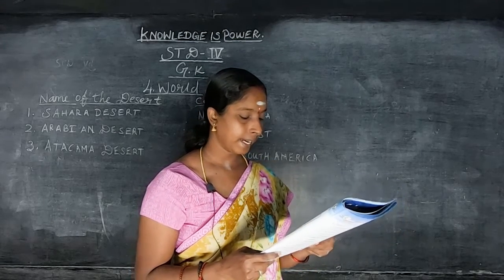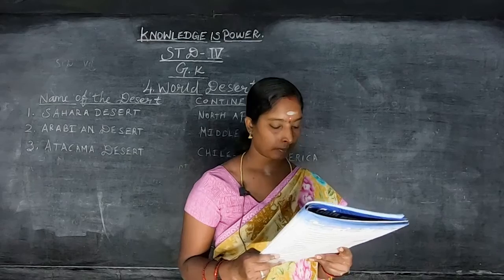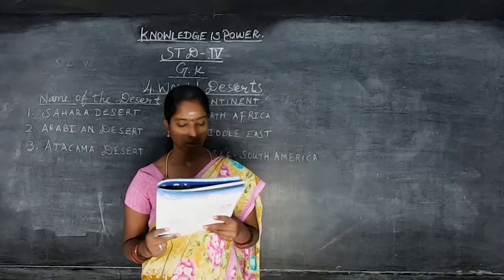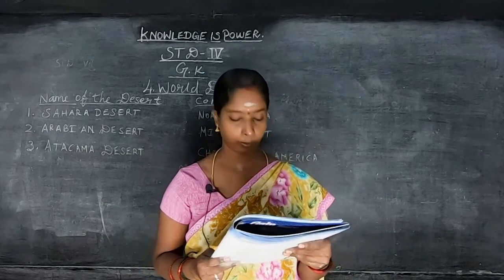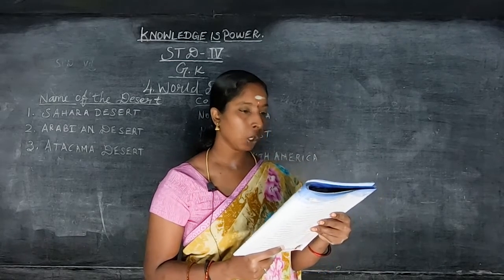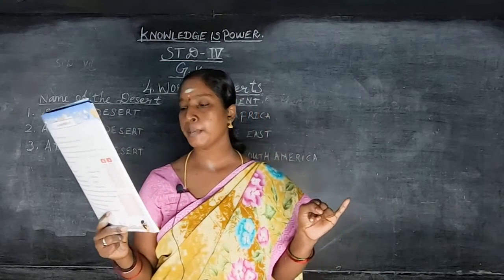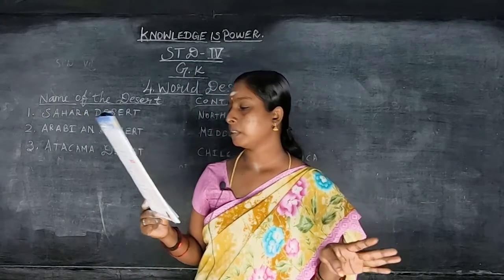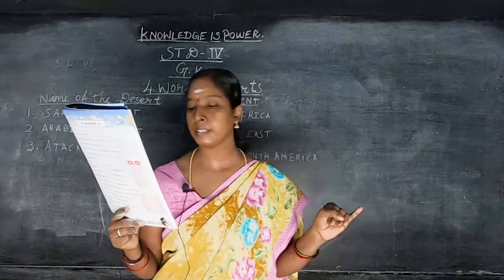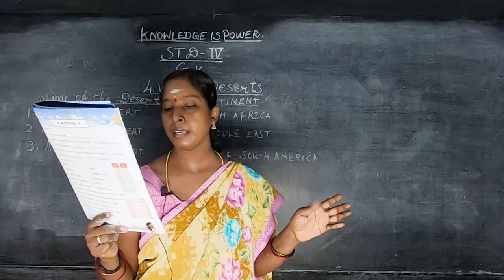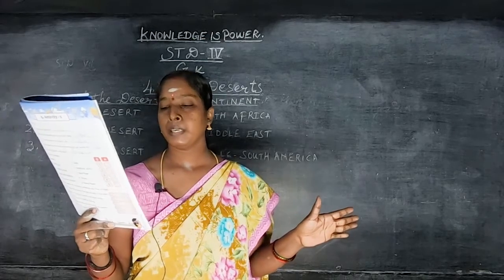Number seven: Great Sandy Desert. Continent: Australia. Number eight: Gibson Desert. Continent: Australia. Number nine: Sonoran Desert. Continent: USA. Number ten: Gobi Desert. Continent: China. These are the 10 largest deserts in the world.